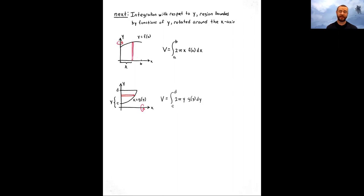So here, we'll just switch x's to y's and functions of x to functions of y. It's a different orientation, kind of flipped on the side. A similar argument gives you this volume formula: instead of 2πx times f of x, it's 2πy times a function of y, integrated with respect to y. The distance from the axis of rotation — the x-axis — up to that horizontally oriented shell is y units. That's where the change comes from. The clue for the first version was rotating around the y-axis; this new version is rotating around the x-axis.